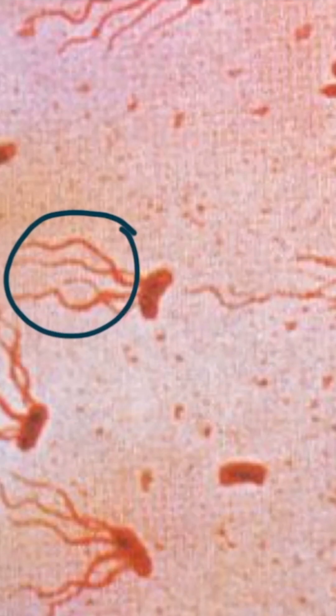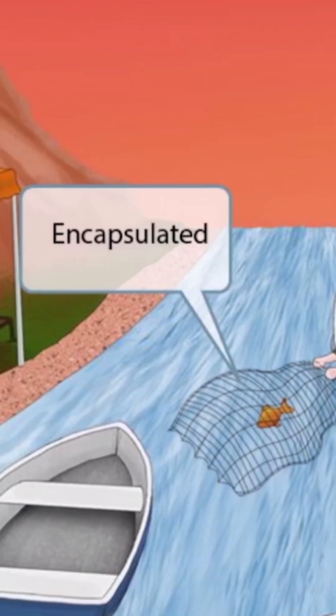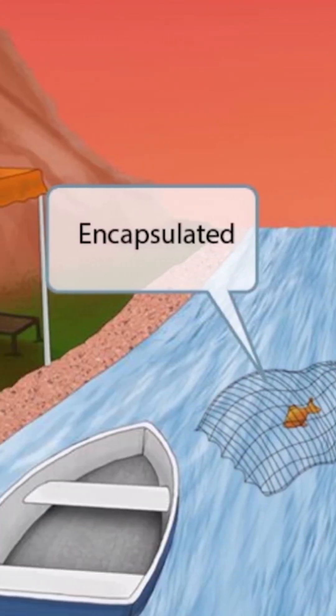Okay, with this in mind, let's return to the image. Notice that now we've added our first character to the scene. He's trying to catch a fish with a net that completely surrounds the fish, just like a capsule completely surrounds a bacterium. So the net in this part of the image is here to help you remember that Salmonella is encapsulated.